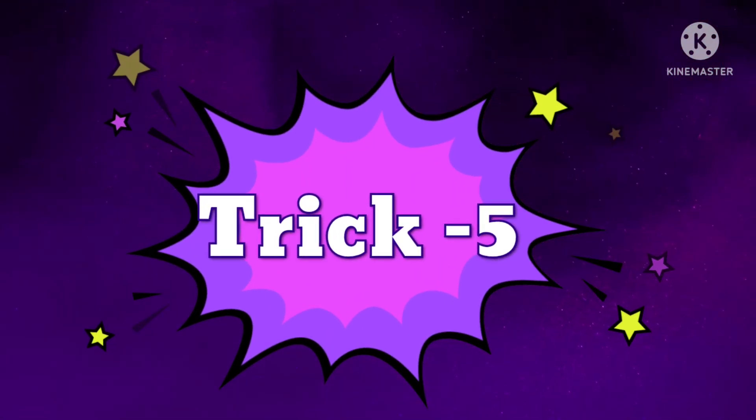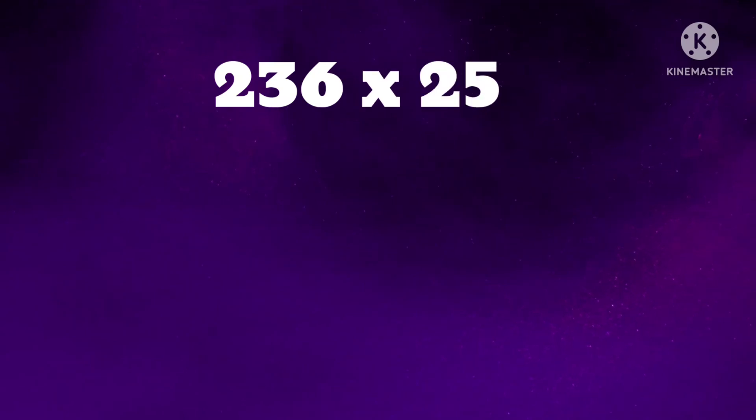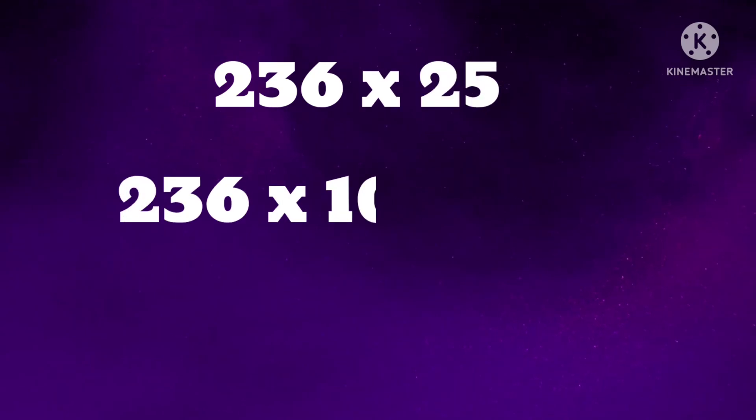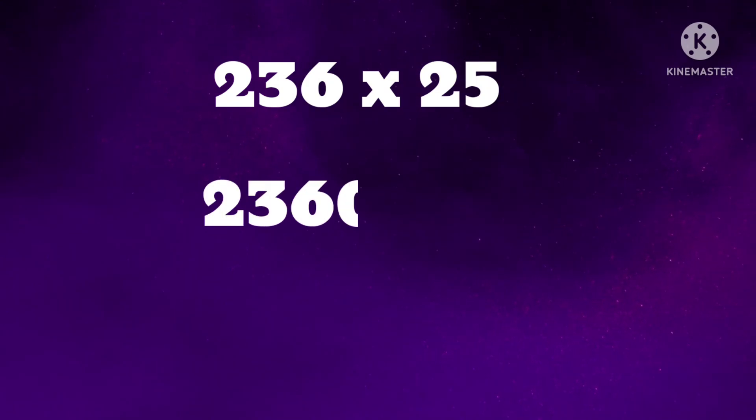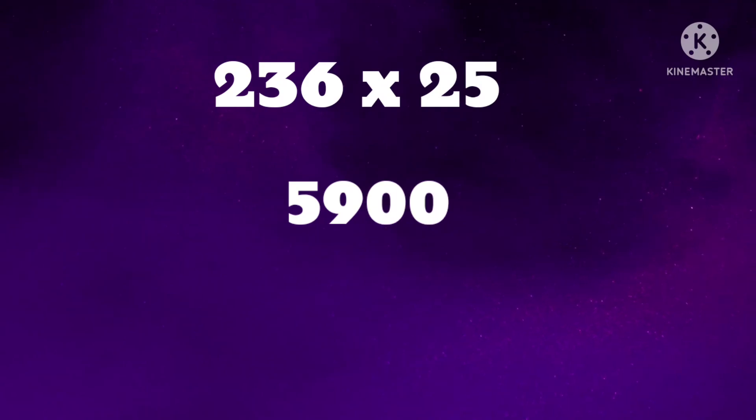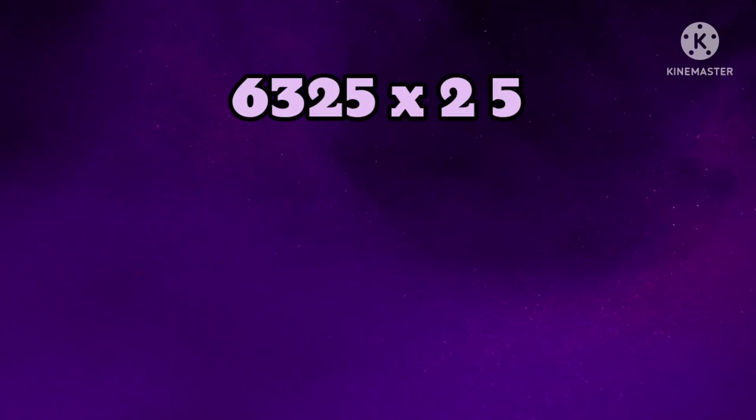Let's see the final trick. 236 into 25. First, multiply the number by 100: 23600. Then 23600 divided by 4. Answer is 5900.